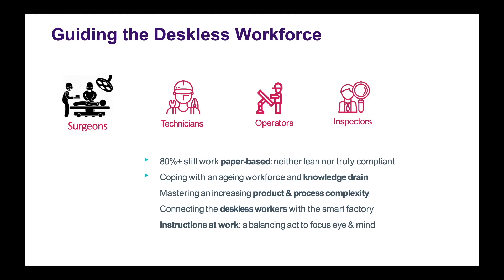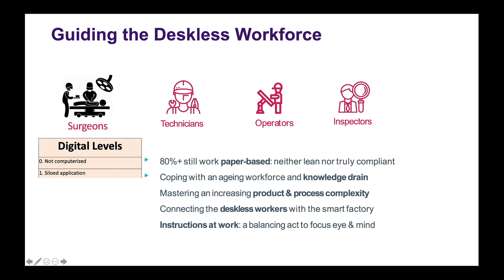Digital level zero is the absence of any digital operations. Moving to digital work instructions on a siloed application such as a phone or tablet is level one. This allows instructions to be personalized depending on the experience of the operator, used for new operator training, and supports workflows with much variety and complexity. Level two is an enterprise data platform. Level three adds internet connectivity for easy interaction with value chain partners. Level four leverages the cloud for scalability and robustness.